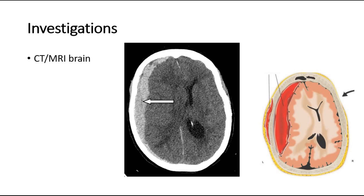For investigations, we can do imaging like CT or MRI scan of the brain, where we will be able to see a blood clot. You can see in this picture the CT scan of the brain — look for this crescent-shaped collection of blood over one side of the hemisphere. This arrow is pointing towards this crescent-shaped hematoma, which is suggestive of subdural hematoma.